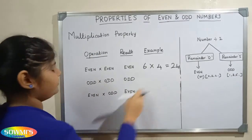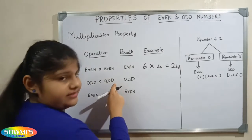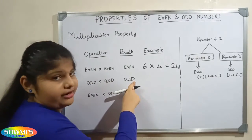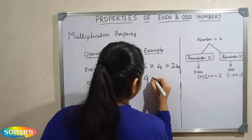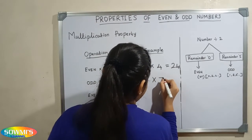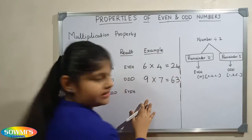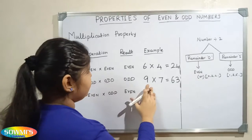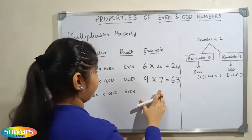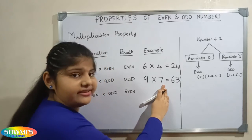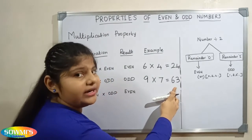When we multiply two odd numbers, the result will be an odd number. For example, 9 multiplied by 7 is equal to 63. Here 9 and 7 are the two odd numbers, and 63 is an odd number.